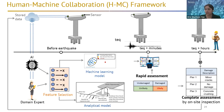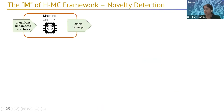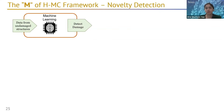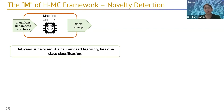For seismic structural health monitoring, one challenge is that we only have actual data from undamaged structures, but we want to detect damage. For such cases, there is an approach between supervised and unsupervised learning called one-class classification, where you have labeled data from only one class. I use this one-class classification method in my framework.